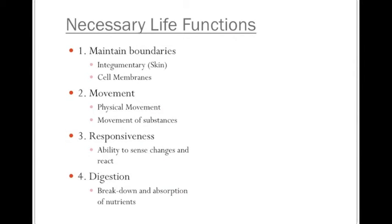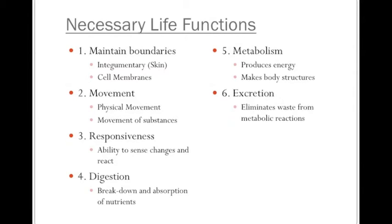The next three have to do with how we get energy so our cells can continue to function. The first ability would be to digest — to break down and absorb nutrients. Next would be to take these nutrients and be able to produce energy, which is the term metabolism. Just because a person is able to digest or absorb doesn't mean they're also going to be able to make energy, so this is also essential. And then finally, that we can excrete or eliminate waste from these metabolic reactions. All three of these necessary life functions do come from our digestive system, but each are independently important.